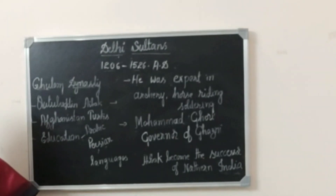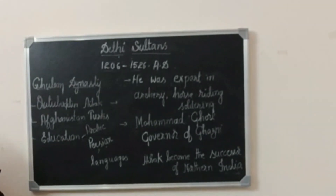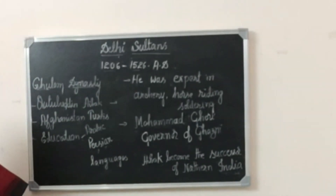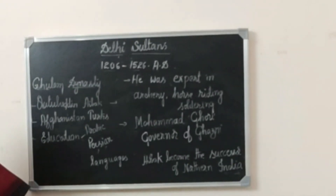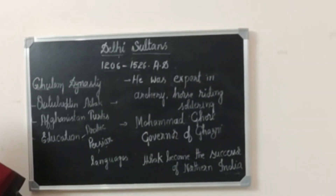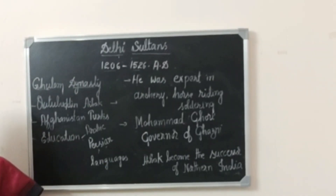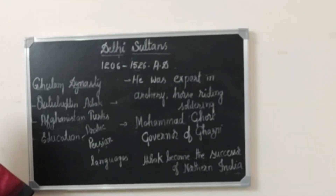In your last class, children, you have learnt about the first battle and second battle of Tarain. In the second battle of Tarain, which took place in 1192, which was fought between Muhammad Ghori and Prithviraj Chauhan, Qutb-ud-din Aibak helped Muhammad Ghori to fight against Prithviraj. Prithviraj was defeated and he was killed by Muhammad Ghori.